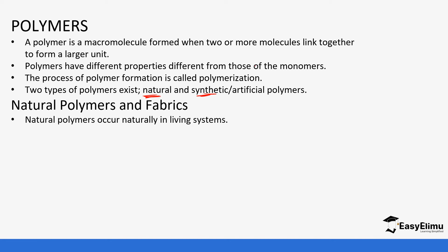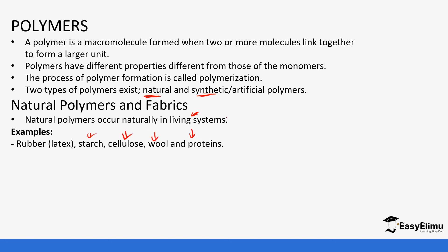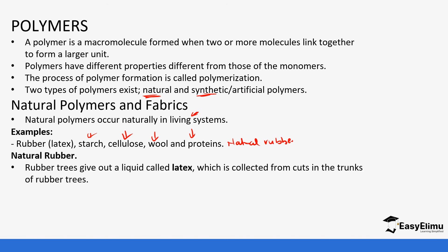Natural polymers usually occur naturally in living systems. Examples include starch, cellulose, wool, protein, and natural rubber. Trees give out latex which is collected from the tree trunks, and natural rubber is made from the latex of rubber trees.